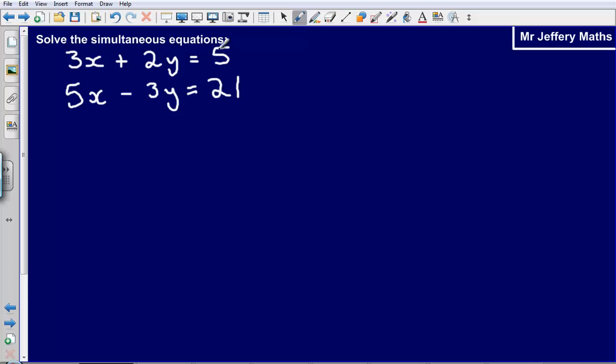Here we have solve the simultaneous equations: 3x plus 2y is equal to 5 and 5x minus 3y is equal to 21.